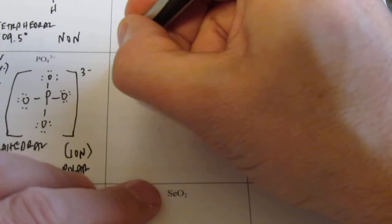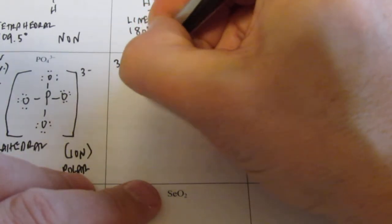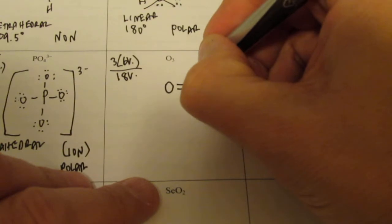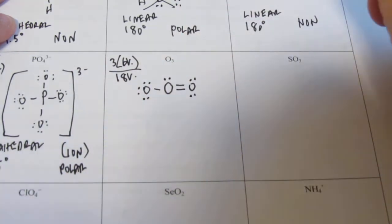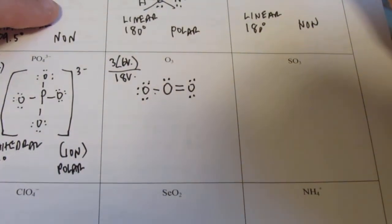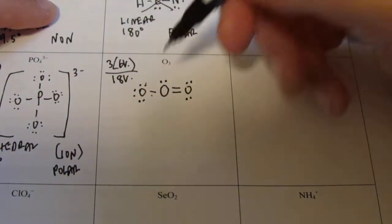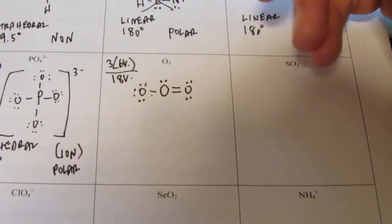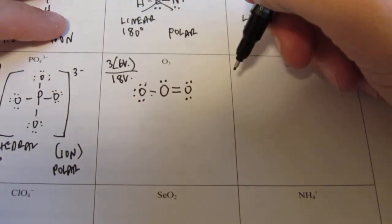O3 — that's ozone. It's 3 oxygens and each oxygen has 6 valence, so it looks like I have 18 valence to work with. I happen to know there's a double bond on one side and a single bond on the other. This oxygen needs 2 more pairs, this oxygen needs 1 more pair to give it its octet, and this one needs 3 more pairs. 2, 4, 6, 8, 10, 12, 14, 16, 18 — that works. Do you remember what resonance is? Resonance means it's really not 1 double bond and 1 single bond — it's actually shared in both positions, so in reality it's a bond and a half to each oxygen.